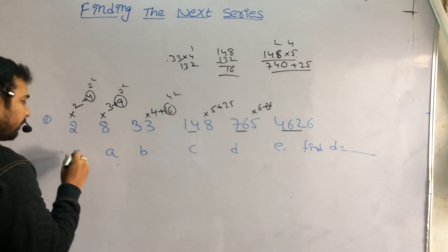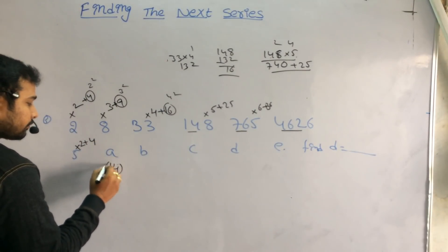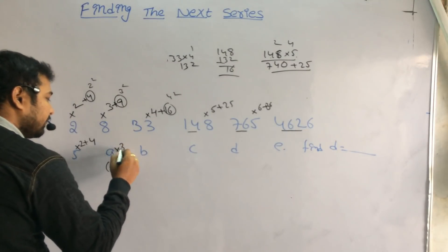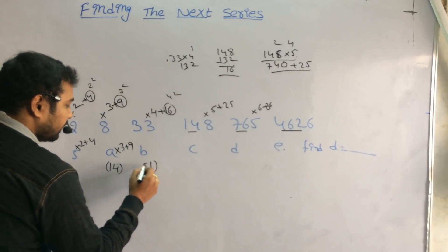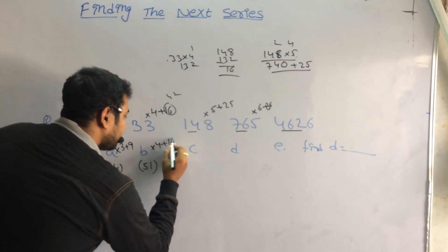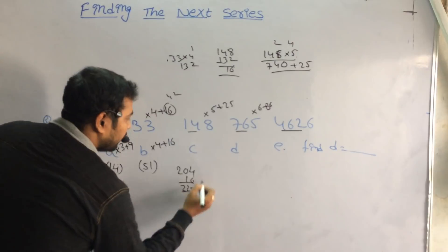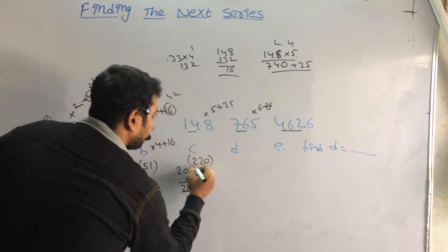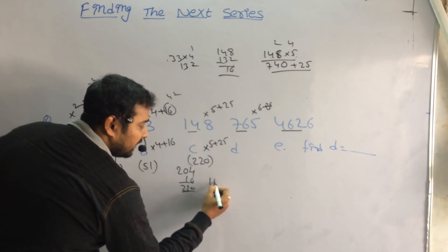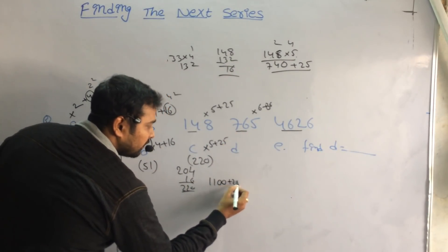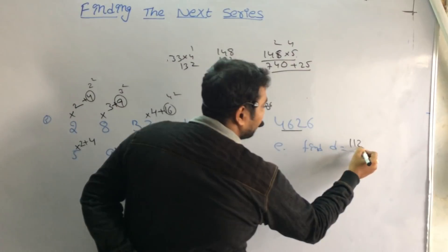We apply the same logic to 5. 5 into 2 plus 4 is 14. Then 14 into 3 plus 9 is 51. Then 51 into 4 plus 16 is 220. Then 220 into 5 plus 25 is 1125. So the value of D is 1125.